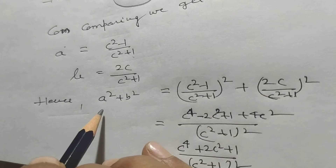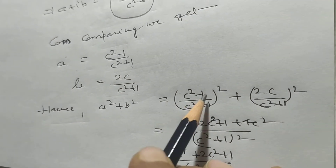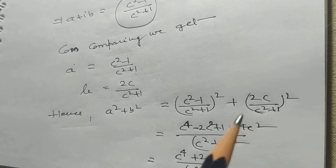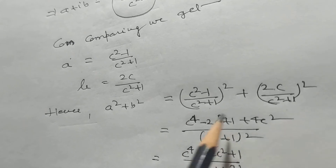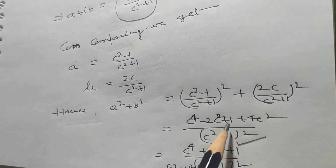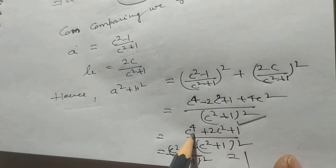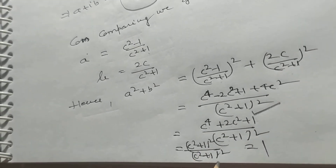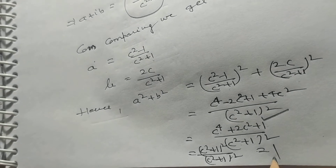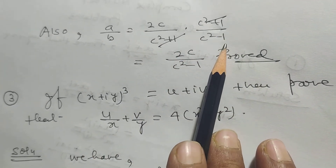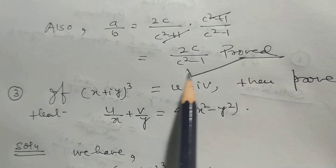Now a²+b² = ((c²-1)/(c²+1))² + (2c/(c²+1))². Taking (c²+1)² as the LCM, it becomes (c⁴-2c²+1+4c²)/(c²+1)² = (c²+1)²/(c²+1)² = 1. And b/a = (2c/(c²+1)) · ((c²+1)/(c²-1)) = 2c/(c²-1)... that is 2c/(c²+1).